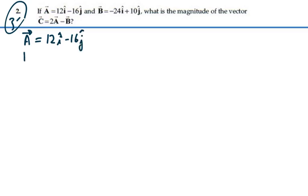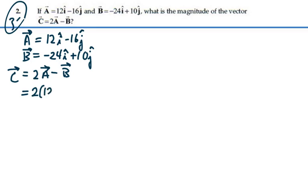Our B is negative 24i plus 10j. C is equal to 2A minus B in terms of vectors. So this is going to be 2 times 12i minus 16j for A, minus vector B, which is negative 24i plus 10j.